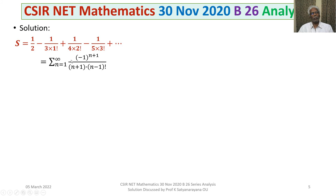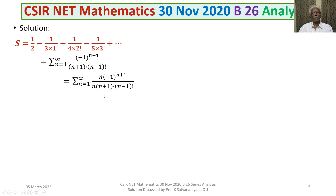Now we want to multiply both numerator and denominator by n. We do this because if you multiply both numerator and denominator by n, then the denominator can be written as n plus 1 factorial: n times (n minus 1) factorial is n factorial, and n factorial multiplied by n plus 1 is n plus 1 factorial. So after this multiplication, the denominator becomes n plus 1 factorial.